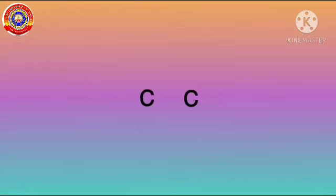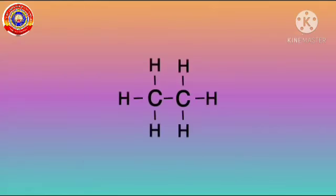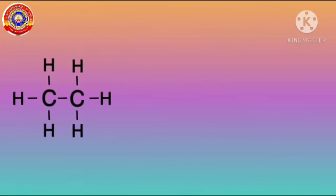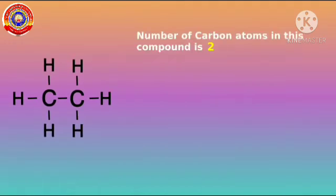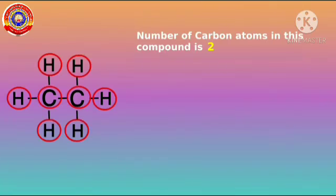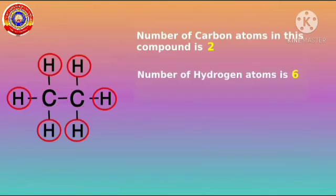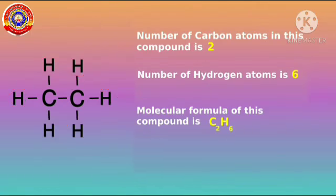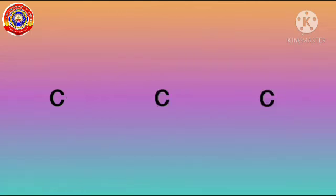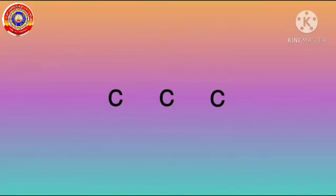See the next structure. Here the carbon atoms are united by a single bond, and the other three valencies of carbon are satisfied by hydrogen. The number of carbon atoms in this compound is two and that of hydrogen is six, so the molecular formula of this compound is C₂H₆.